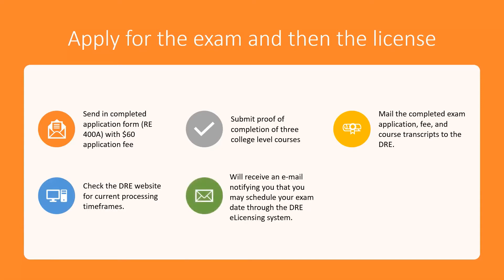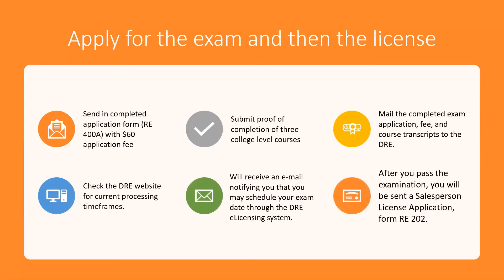You get an email telling you that they have processed your application and you can now set a test date. When you pass the test, you would send them a salesperson's license application, which is form 202. The reason people do this is because they're not sure they're going to pass the exam, and they don't want to pay for the exam and the license at the same time, plus getting their fingerprints done. Plus $60 is less than doing all that other stuff.